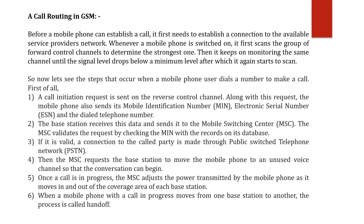The next part is call routing in GSM — how a call is going to be established using the GSM system. Before a mobile phone can establish a call, it first needs to establish a connection to the available service provider network. Whenever a mobile phone is switched on, it first scans the group of forward control channels to determine the strongest one, and then it keeps monitoring the same channel until the signal level drops below the minimum level.